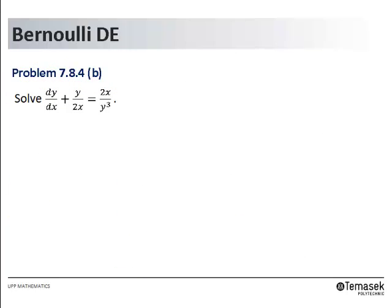Let us solve the following differential equation using the method described earlier. Notice that on the right hand side, we have the factor of 1 over y cube. So multiplying throughout the DE by y cube, we will get y cube dy/dx plus 1 over 2x y to the power 4 equals 2x.